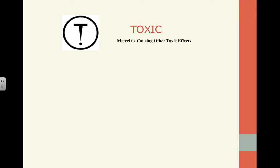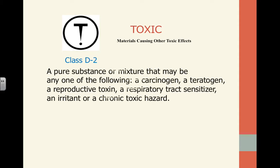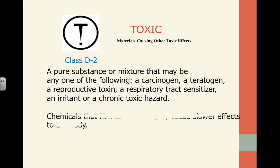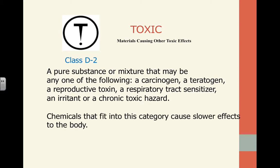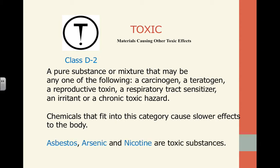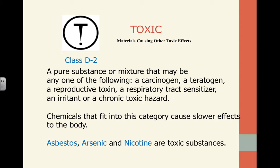Finally, toxic materials can cause other toxic effects — slower effects that cause damage to our body over time. When certain pure substances or mixtures are combined, we can get long-term effects. Examples include asbestos and nicotine. With cigarettes, nicotine causes long-term effects on the body; we don't notice it immediately, but it causes severe damage. These are toxic materials.